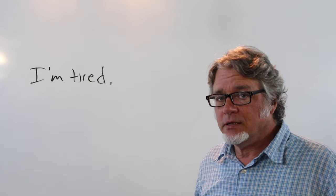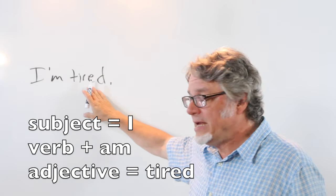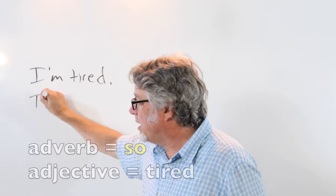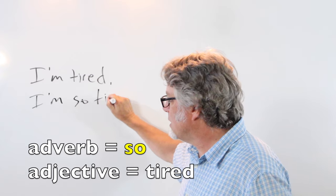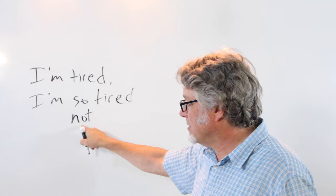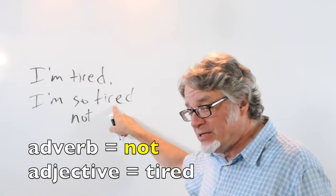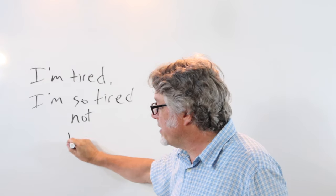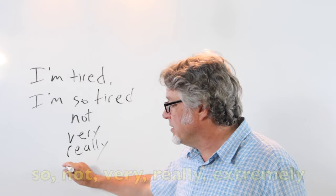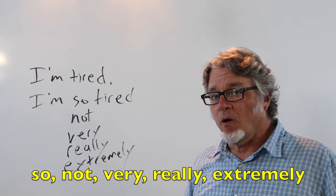In 'I'm tired,' here's the subject, here's the verb, and 'tired' is the adjective. We can put an adverb right before it: I'm so tired. Or you could say I'm not tired — 'not' is an adverb that gives information about the adjective. You can also say I'm very tired, I'm really tired, or I'm extremely tired. These are all adverbs.